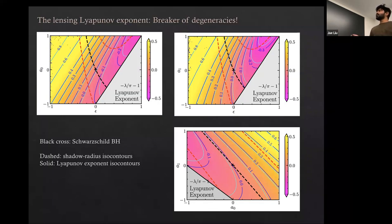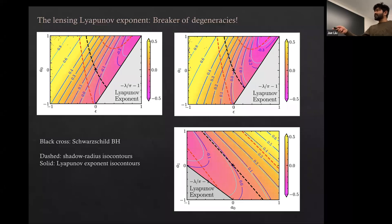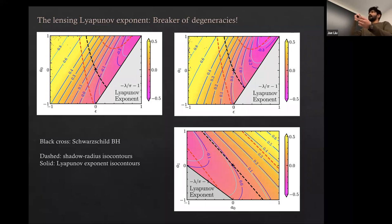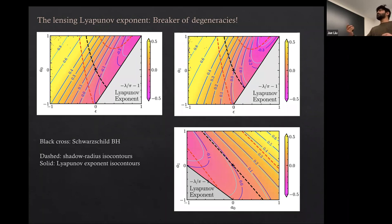Showing the same parameter spaces as before for two-dimensional black hole models, where the dashed lines show sets of black holes with exactly the same shadow size, the Lyapunov exponent curves intersect at single points. So you can use the Lyapunov exponent to break degeneracies. You should measure both the Lyapunov exponent and the shadow size from black hole images. This is where we're going, and it's very exciting — we can get much stronger constraints on GR by using both observables.